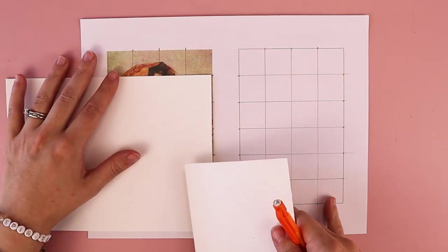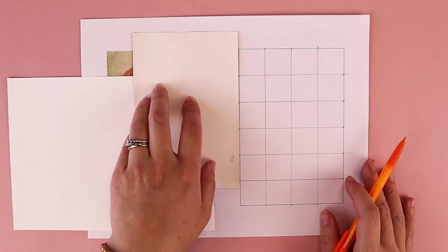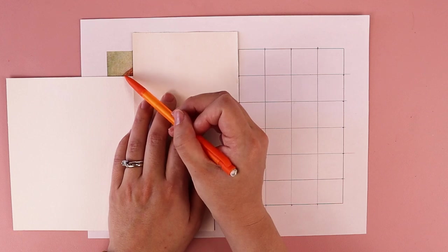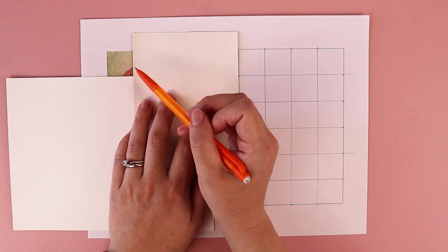So that way you're only focusing on that one piece of the picture. So you don't have to do that, but this can be helpful if you want. So what I'm doing is I'm looking at this first square and I just see the little hint of a curve right here in the corner.